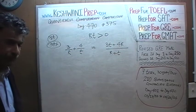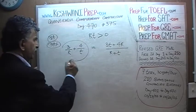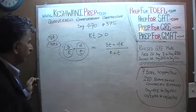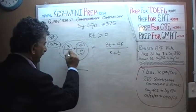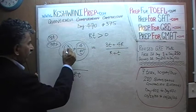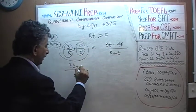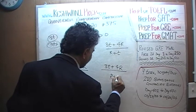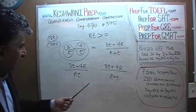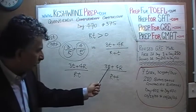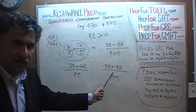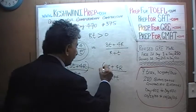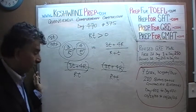First thing we want to do is look at the quantity in column A — we are dealing with two fractions. Let's combine these two fractions together so it is easier to deal with. If we combine them, the common denominator is going to be R times T, and on top we will end up with 3T plus 4R. In the other column we have 3T plus 4R over R plus T. The very first thing we notice now is that the numerator is the same in both cases — it no longer plays any role. If you divide both columns by 3T plus 4R, this numerator drops out.